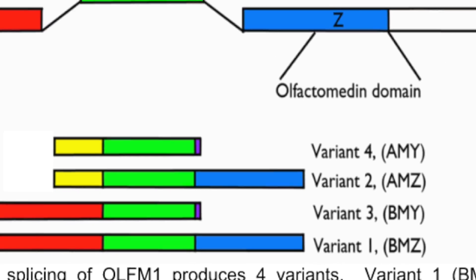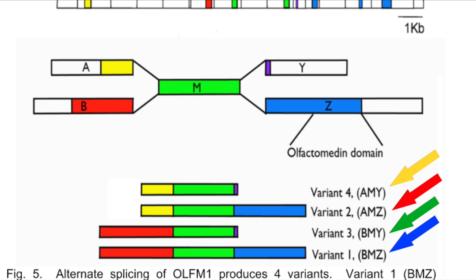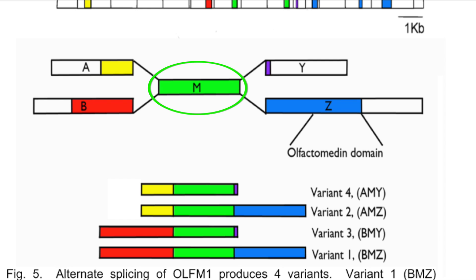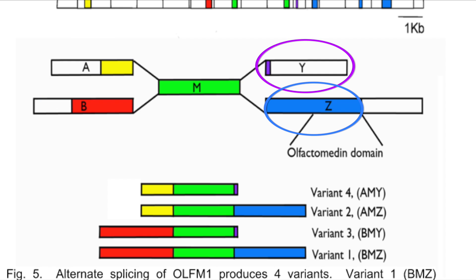Olfactomedin is an extracellular protein produced in four different alternately spliced isoforms from a single gene. It contains a conserved 250 amino acid olfactomedin domain, a common M-centered domain with either A or B exons, and Z or Y terminals. There are four different olfactomedin variants.